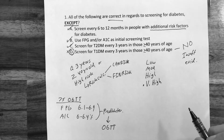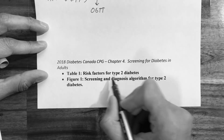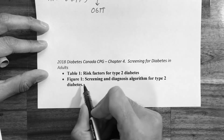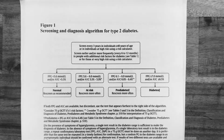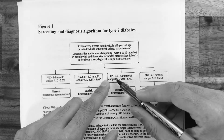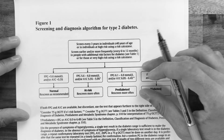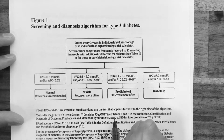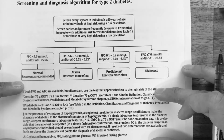For reference, this is from chapter 4, screening for diabetes in adults. Please refer to table 1 — risk factors for type 2 diabetes — which lists all risk factors based on a person's condition or medications. Also refer to figure 1 — the screening and diagnosis algorithm for type 2 diabetes. This shows when to consider the oral glucose tolerance test: when fasting plasma glucose is 6.1 to 6.9 and A1c is 6 to 6.4, the algorithm indicates to consider a 75 gram oral glucose tolerance test.